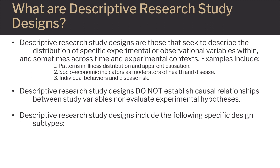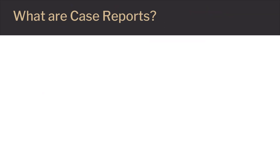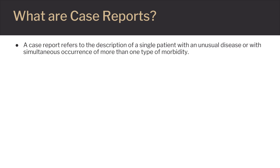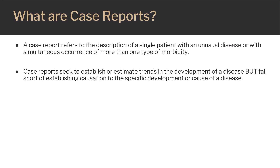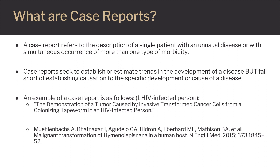The specific types of research in this presentation include case reports. A case report refers to the description of a single patient with an unusual disease or with simultaneous occurrence of more than one type of disease. This type of research seeks to establish or estimate trends in the development of a disease, but falls short of establishing causation. This slide contains an example of a case study which features one person, which inherently makes it a case report.